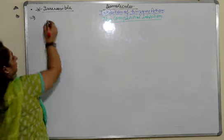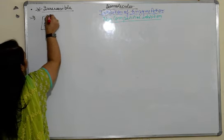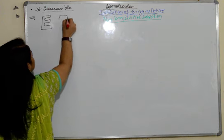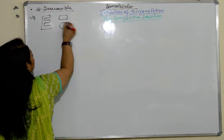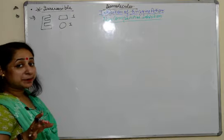In non-competitive, the shape is different. For example, this is the enzyme and this is the substrate, and this is the inhibitor. You can see they have different shapes, so this inhibitor cannot attach on the active site.